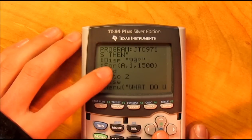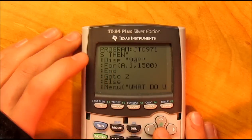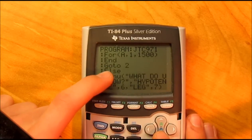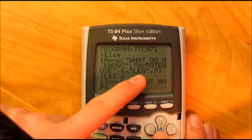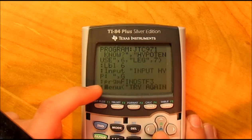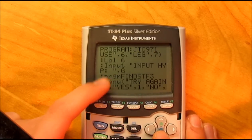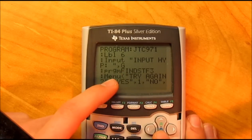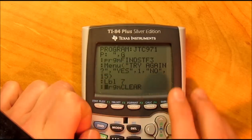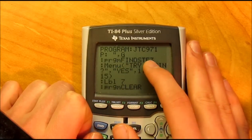Then after that, if it isn't bad, it says else menu, do you know hypotenuse or leg. This takes you to hypotenuse, so you input the hypotenuse and then you run program find stuff 3.